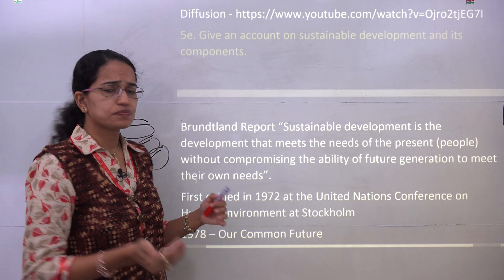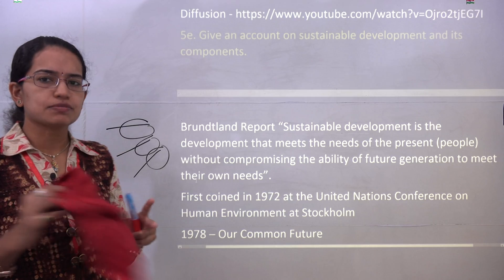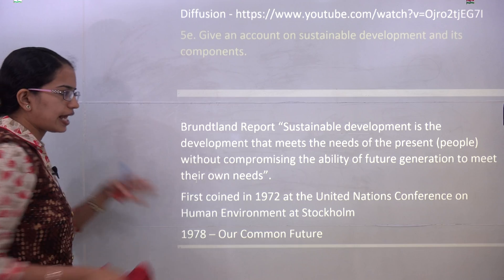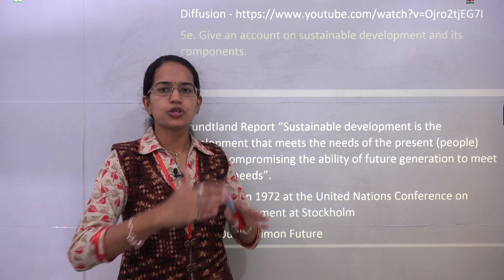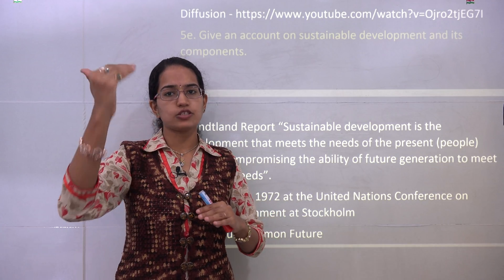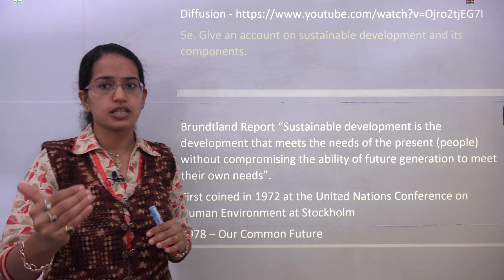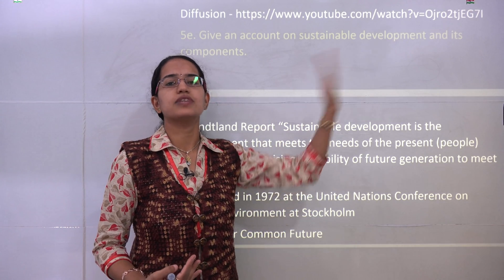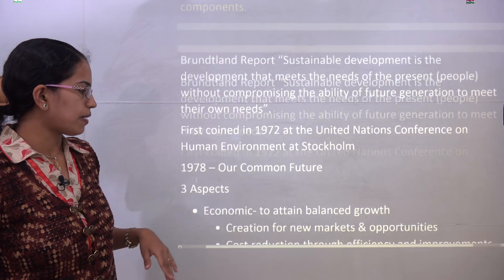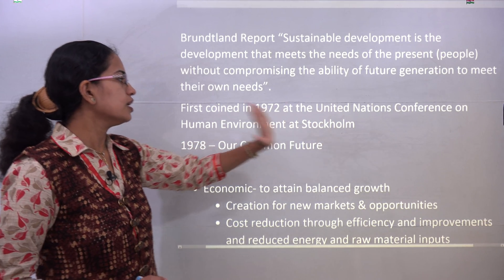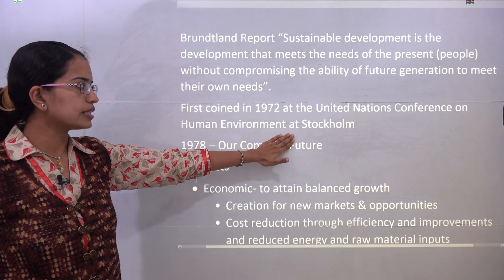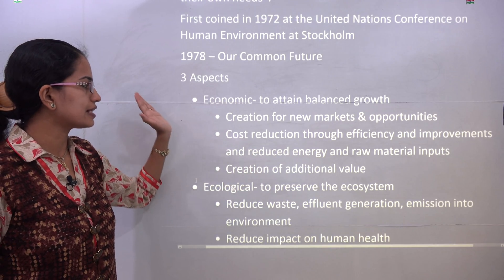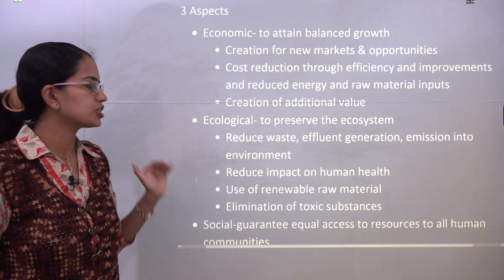The next is sustainable development — basically a development in a way such that we are utilizing resources for today and are able to meet the requirements of future generations as well. This idea was propounded and first coined at the UN Conference on Human Environment at Stockholm in 1972. Then you had 'Our Common Future,' and the three aspects discussed are economic, ecological, and social.